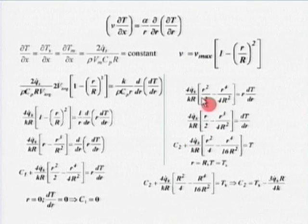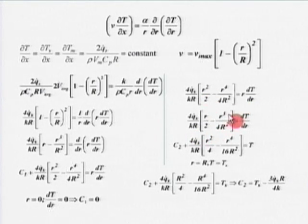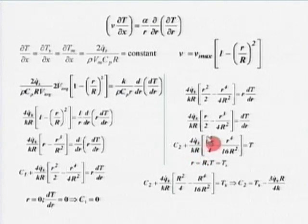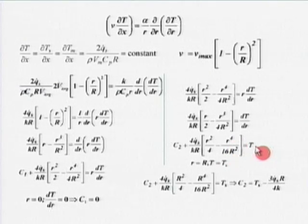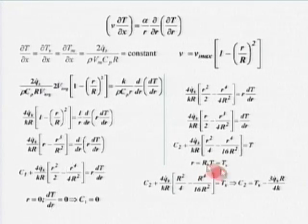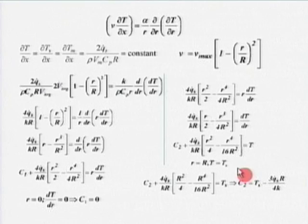With C₁ = 0, dividing by r: (4Q_dot_s)/(kR) × [r/2 − r³/(4R²)] = dT/dr. Integrating again: C₂ + (4Q_dot_s)/(kR) × [r²/4 − r⁴/(16R²)] = T. Now I need to find C₂. At r = R (wall), T = T_s. Even for constant heat flux there is a wall temperature T_s, even if I do not know it — let it be T_s.